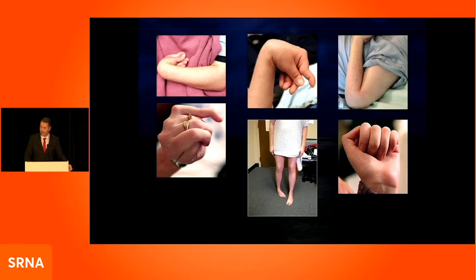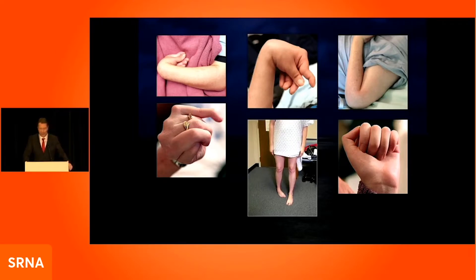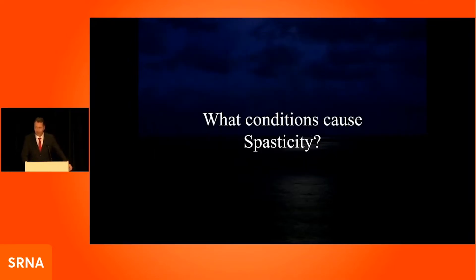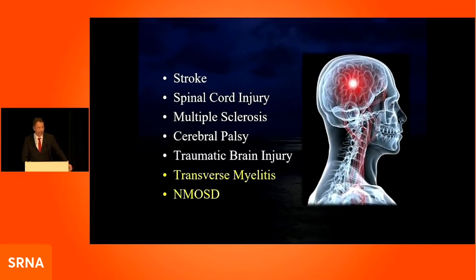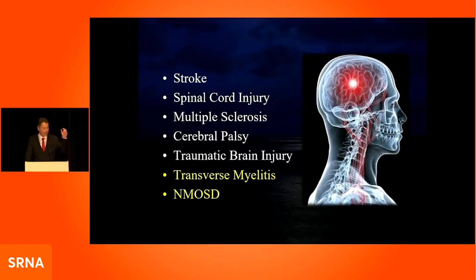Many TM patients complain of toe curling that they can't control — sometimes you even see the top of the shoe wearing off, which is a subtle sign of spasticity. The most common cause of spasticity in the general public is stroke, but others include MS, transverse myelitis, NMOSD — anything that injures the pathways in the spinal cord and disrupts the calming voice from the brain.